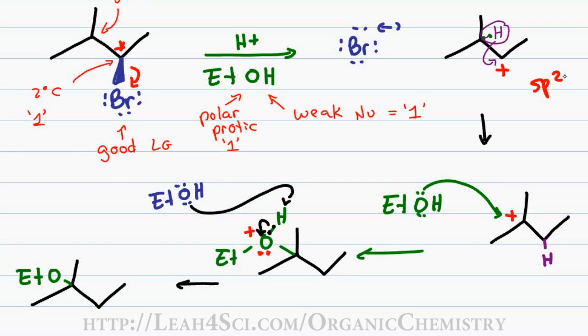If the ethanol had attacked at the secondary carbon, our resulting product would be a racemic mixture where we have 50% R and 50% S of a chiral product.